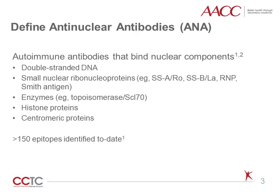ANA are defined as autoimmune antibodies that bind to epitopes in the cell nucleus. In most healthy individuals, these components are viewed by the immune system as self and evade immune attack. However, in patients with a significant derangement of immune self-recognition, production of autoantibodies can result in clinical illness. Listed here are some of the major classes of nuclear components targeted by ANA. Over decades of research, over 150 discrete epitopes have been identified, making ANA a diverse group of antibodies.